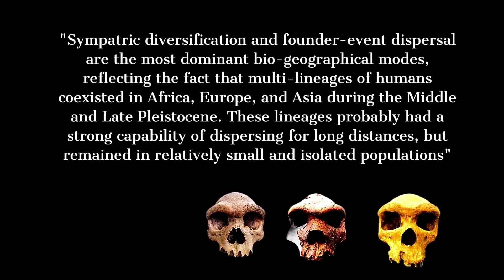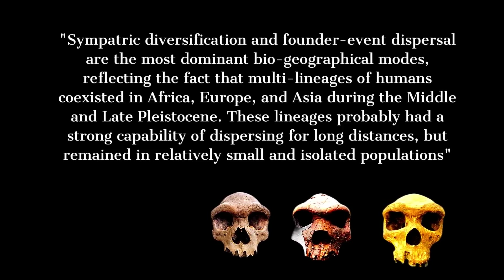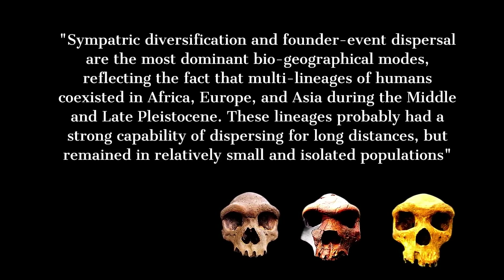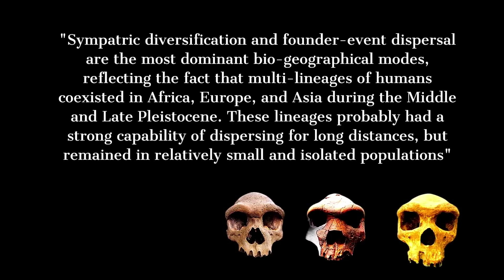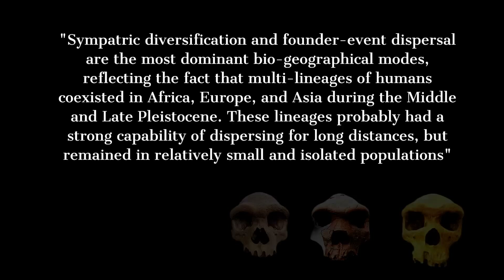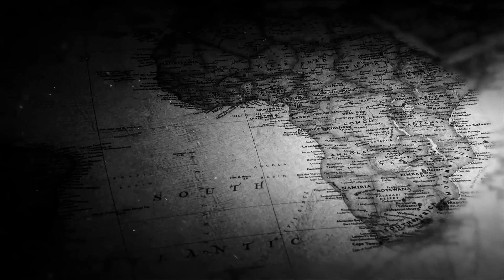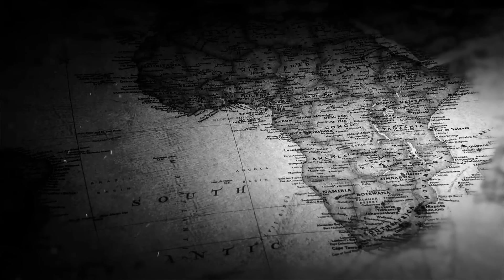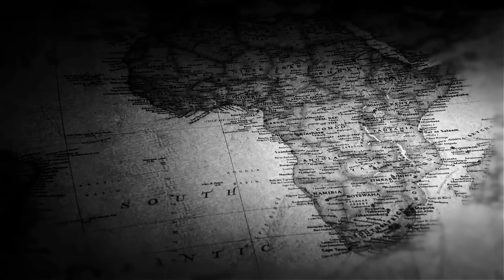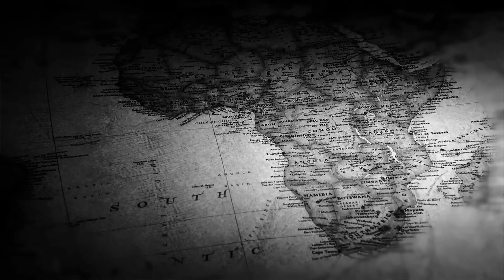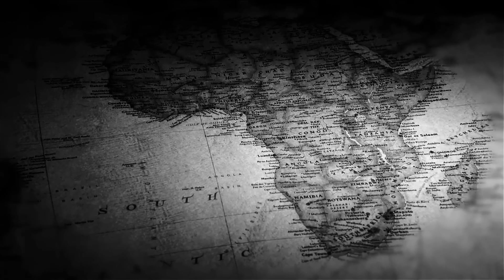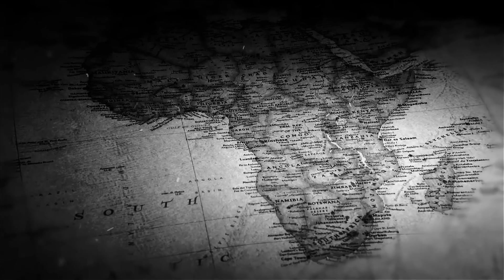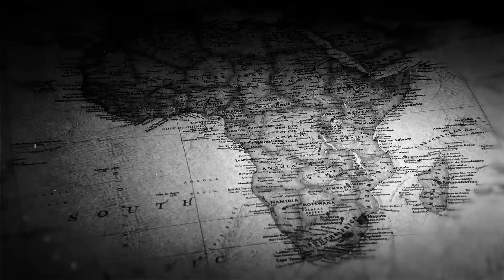These lineages probably had a strong capability of dispersing for long distances, but remained in relatively small and isolated populations, according to the paper. Despite what English naturalist Charles Darwin had hypothesized in his 1871 book Descent of Man, many late 19th-century evolutionary naturalists postulated that Asia, not Africa, was the birthplace of humankind, as it is midway between Europe and America, providing optimal dispersal routes throughout the world.